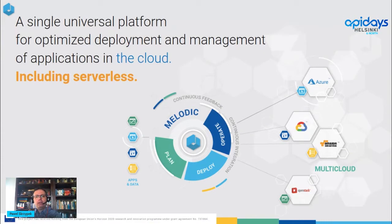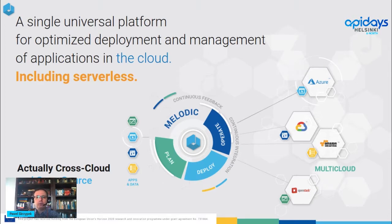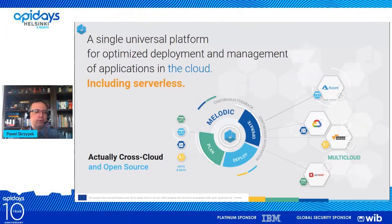I'm personally involved in that project as a cloud architect, and also in the next project, MORPHEMIC. The idea of the project is to create a multi-cloud management platform which is able to optimize deployment and automatically deploy applications to different cloud providers. Most importantly, this platform is fully open source — it can be downloaded and used, and it is a very good example of how to use multi-cloud API and how to design applications for multi-cloud.